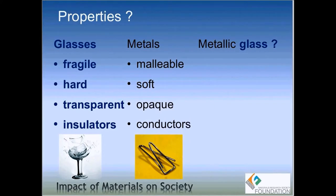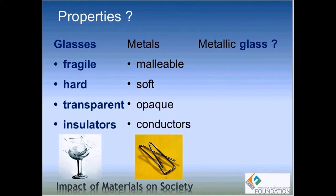Metals are very good electrical and thermal conductors. That's why most electrical cables are made from copper, which is a metal. They are also good thermal conductors: if you heat one end of a metallic piece, the other end will reach the same temperature very quickly. In contrast, glasses are insulators — their electrical and thermal conductivity is not that great, which is why we use glasses for insulating purposes.